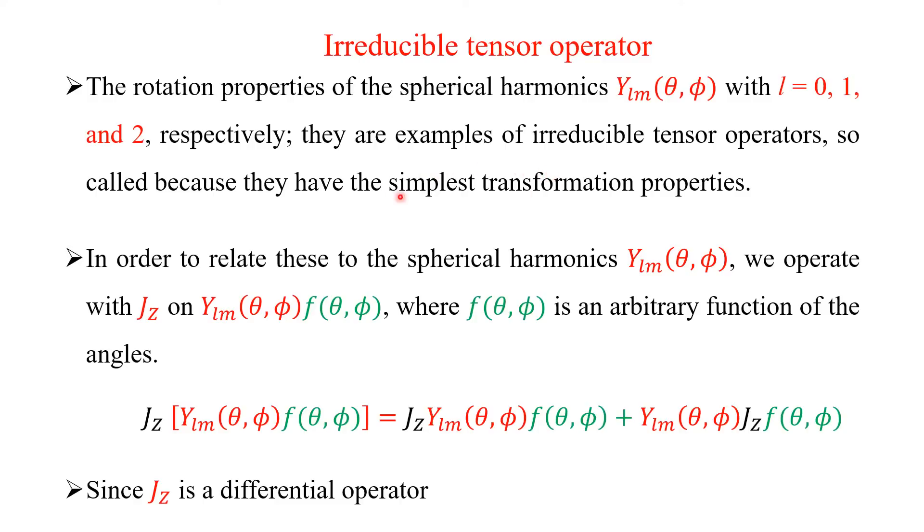They are the example of irreducible tensor operators, so called because they have a simplistic transformation property. Because comparing the Cartesian coordinate, we have already seen the advantage of having the spherical coordinate system.